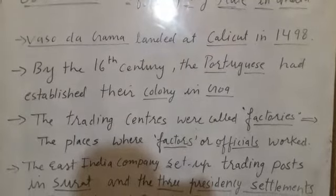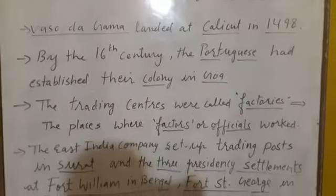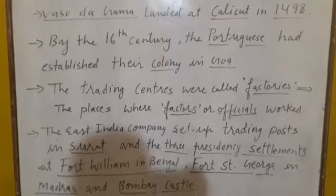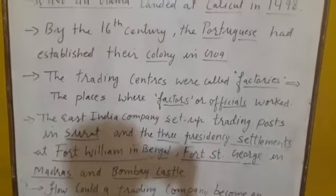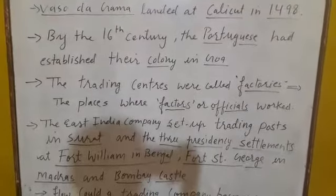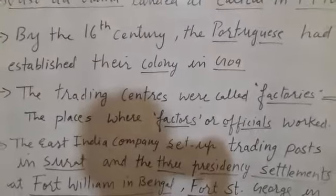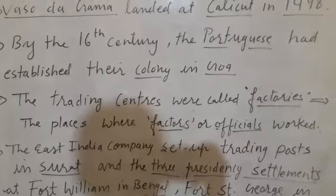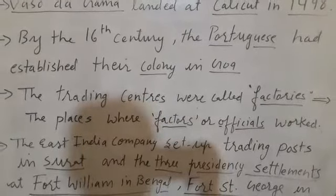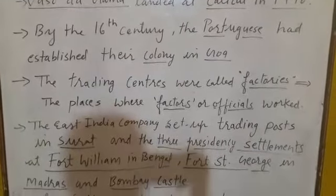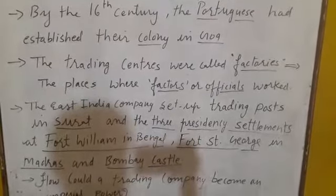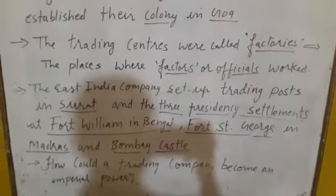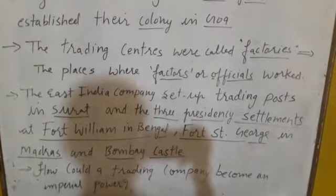Many European trading companies established their trading centers in coastal areas of India. These trading centers were known as factories. Factories means the place where factors or officials worked. My dear students, you should keep in mind the meaning of factories.